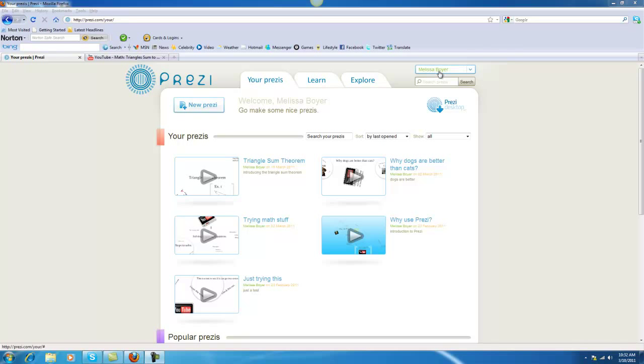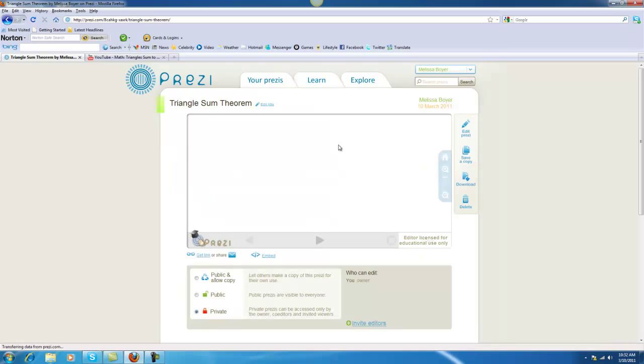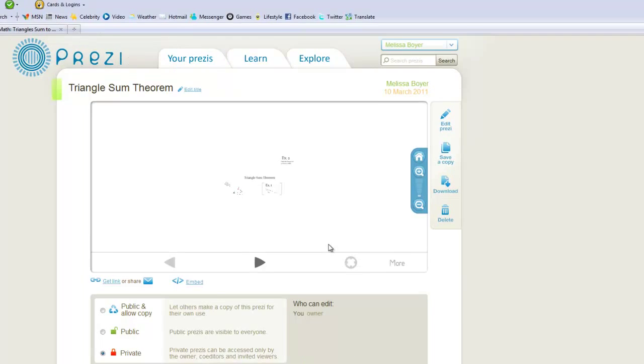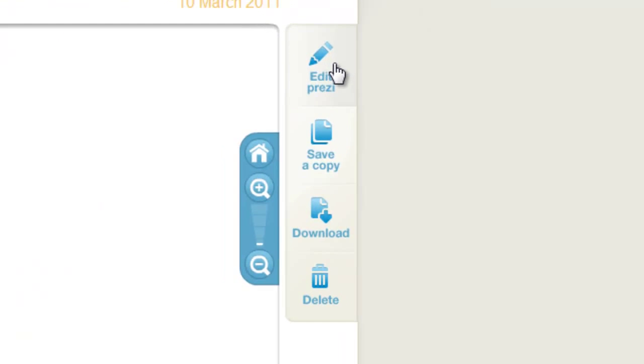First, you need to sign in to your Prezi account, which I've already done. If you'd like to make a new one, click New Prezi, and you can just choose your own title and description. Today, I've already started one on the Triangle Sum Theorem, so you just click on it. It comes up in its own window, then I can click on Edit Prezi.